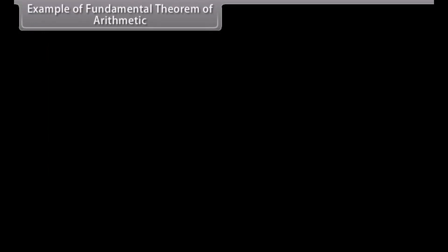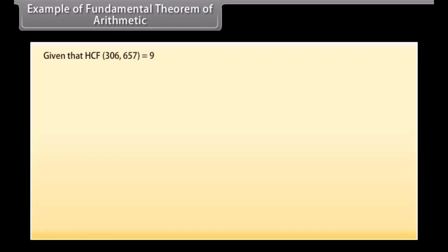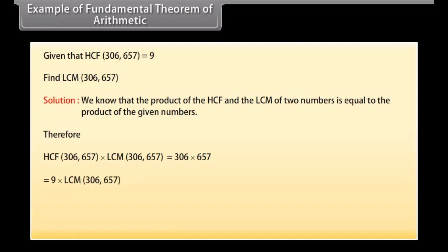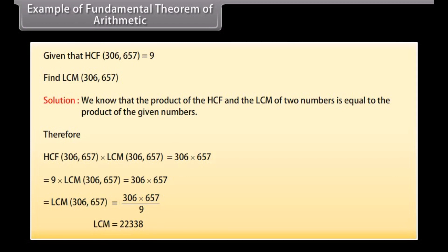Examples of the fundamental theorem of arithmetic. Given that HCF(306, 657) equals 9, find LCM(306, 657). We know that the product of HCF and LCM of two numbers equals the product of the given numbers. Therefore 9 into LCM(306, 657) equals 306 into 657. Thus LCM(306, 657) equals 306 into 657 divided by 9, which equals 22,338.